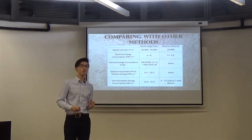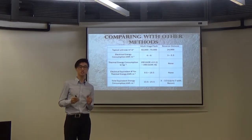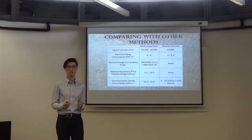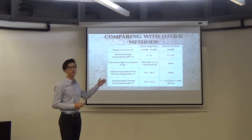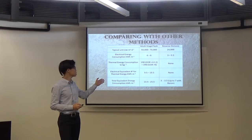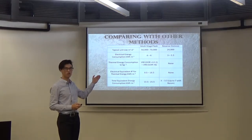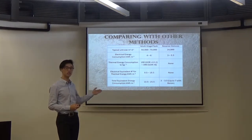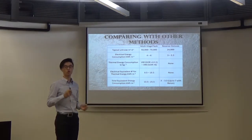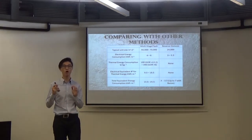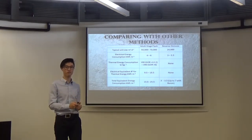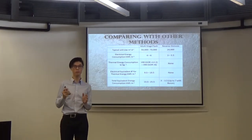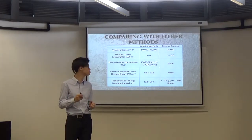With that being said, reverse osmosis is considered one of the most efficient methods for desalination today. This is in comparison with conventional methods such as multi-stage flash distillation which uses 13.5–25.5 kilowatt hours per meter cube, as compared to 3–3.5 kilowatt hours per meter cube for reverse osmosis.